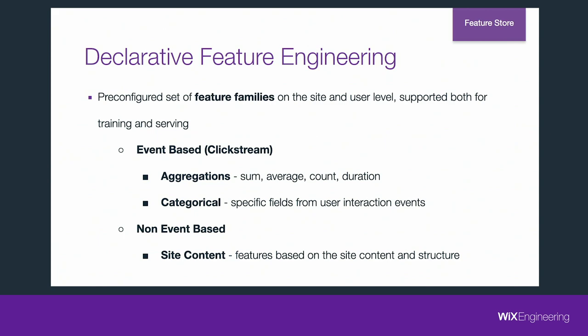By event-based, I mean user interactions — a clickstream. Like: user pressed this component, saved this site, published this site, logged in. These are what I refer to as clickstream events. The first feature family we support is aggregations — doing some average, count, and duration over time windows, like how many times did the user publish the site. The second feature family is categorical, which means taking specific fields from user interactions, from those clickstream events — like from a user's registration event, taking the browser family or the country code.